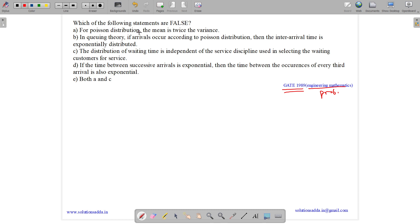For Poisson distribution, the mean is twice the variance. In queuing theory, if arrival occurs according to Poisson distribution, then inter-arrival time is exponentially distributed. The distribution of waiting time is independent of the service discipline used in selecting the waiting customers for service. If the time between successive arrivals is exponential, then the time between the occurrence of every third arrival is also exponential. Option E, both A and C.